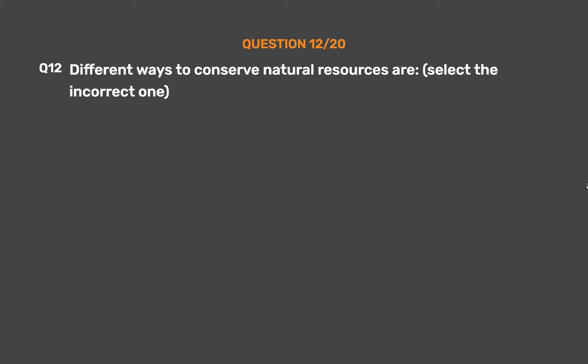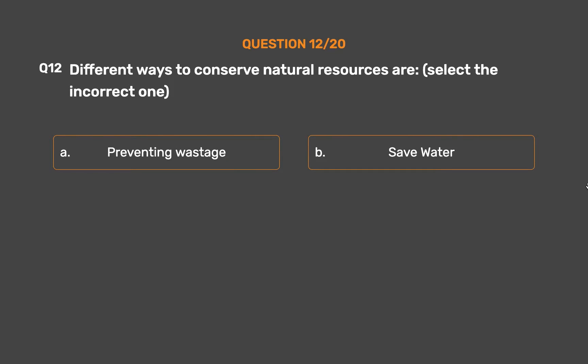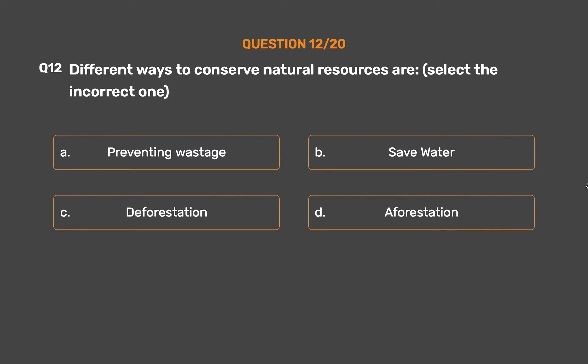Question number 12. Different ways to conserve natural resources — select the incorrect one. Option A: Preventing wastage. Option B: Save water. Option C: Deforestation. Option D: Afforestation.